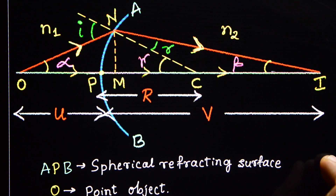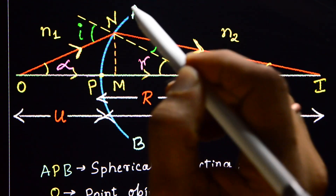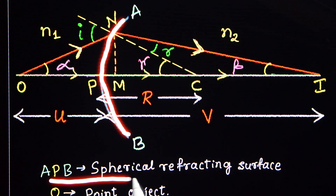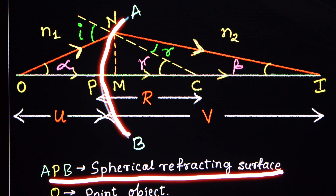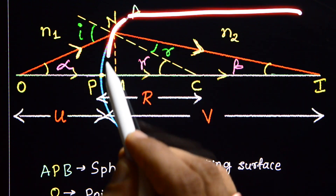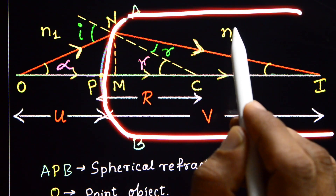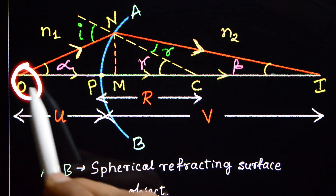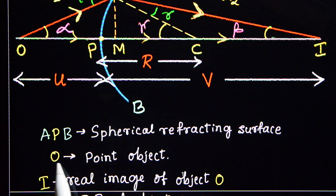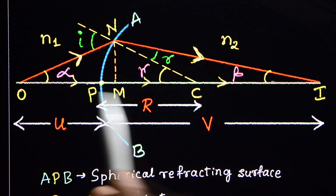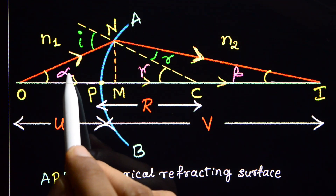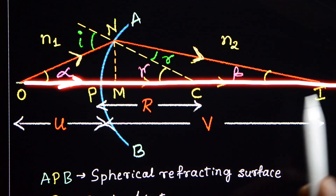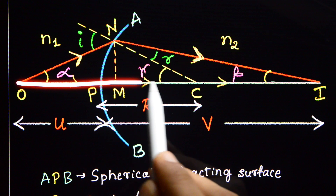You have to draw this diagram. Here, A, P, B is the spherical refracting surface. The right side is the denser medium with refractive index N2. O is a point object on the principal axis. One light ray travels along the principal axis without any deviation because that is a normal incidence.